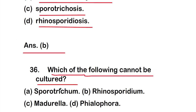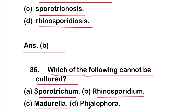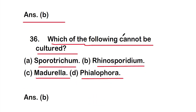Question 36: Which of the following cannot be cultured? Options: option A - Sporothrix, option B - Rhinosporidium, option C - Madurella, or option D - Phialophora. The right answer is option B, Rhinosporidium. Rhinosporidium cannot be cultured.